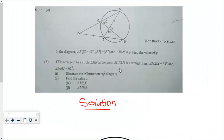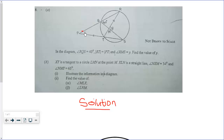Question 8a requires us to find the value of Y. The information given is that this angle is 40 degrees and RT is equal to BT, which means this triangle is isosceles. Therefore, this angle and this angle are equal because they are the base angles of the isosceles triangle.